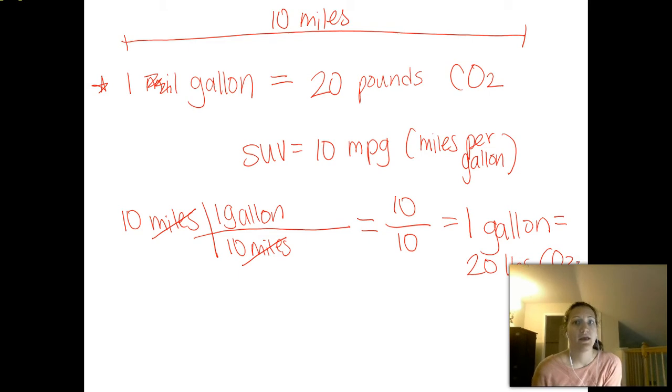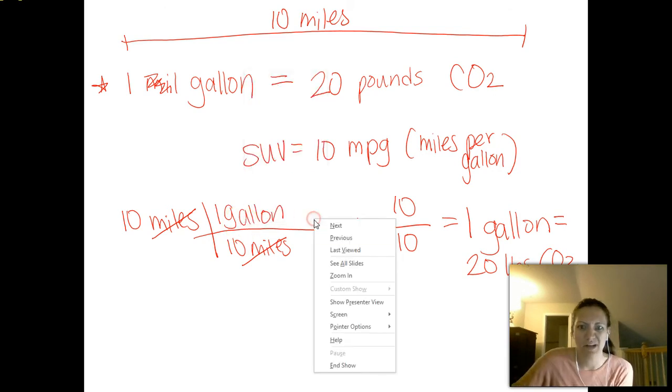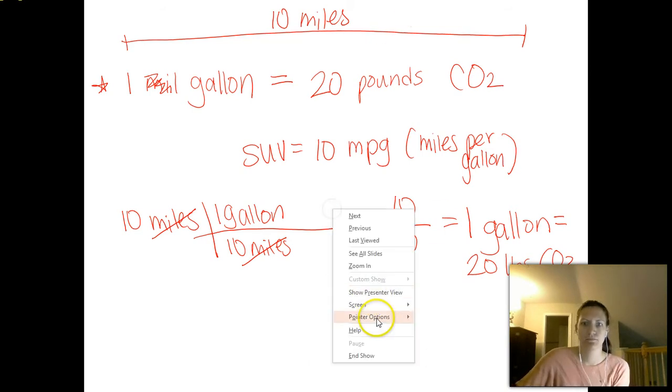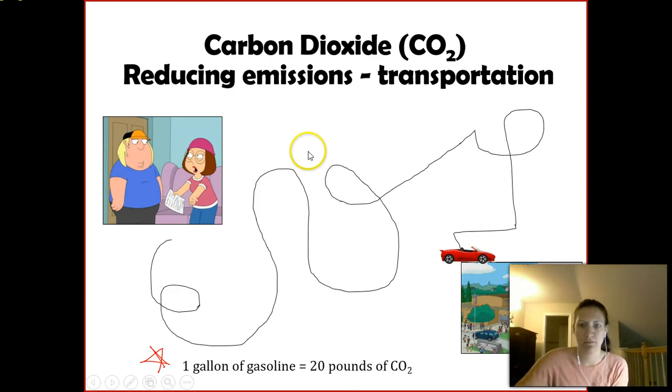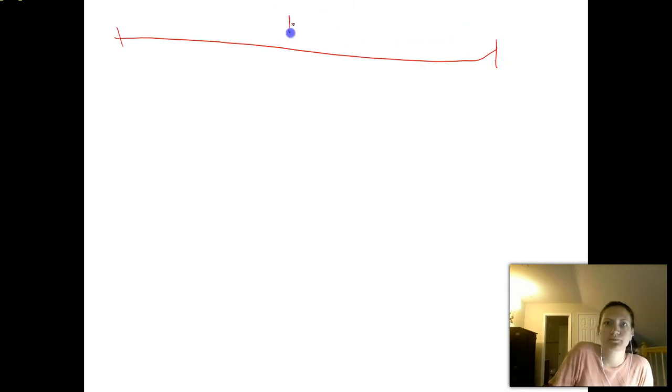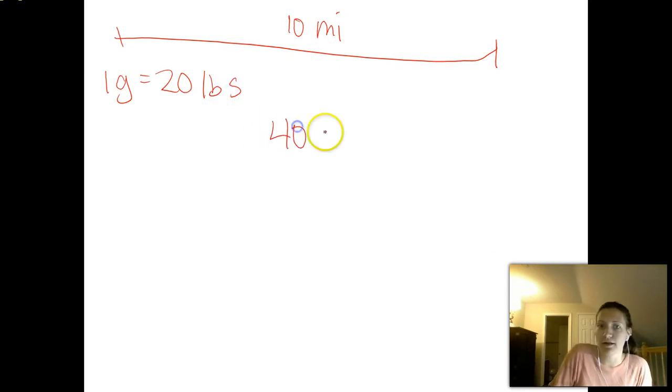So let's make it a little bit harder. Let's say you've got a nice car, or you have a hybrid. I drive a hybrid, and I get about 40 miles to the gallon. So I'm driving the same exact distance. I'm going to be driving this 10 miles to school as well. I just want to erase everything on this slide. We'll try it this way. So same scenario. I'm going to drive 10 miles. And for every 1 gallon, that equals 20 pounds.